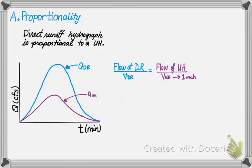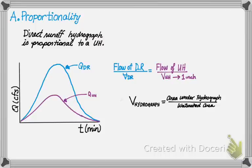We know that the volume of the unit hydrograph is one inch by definition. The volume of the direct runoff can be calculated as the area under the curve, in this case the hydrograph, divided by the watershed area, and converted into inches.